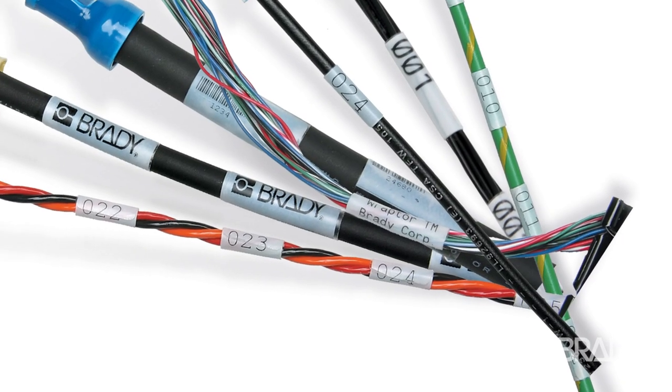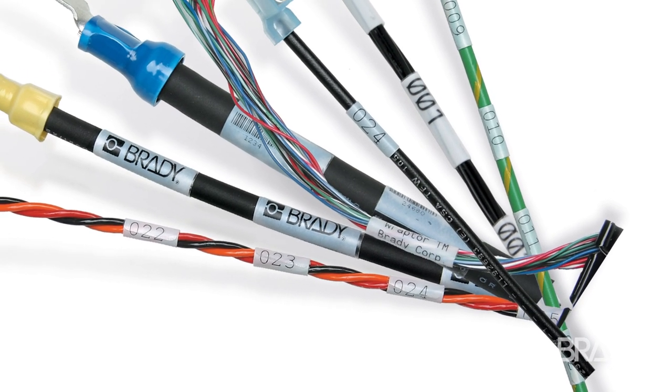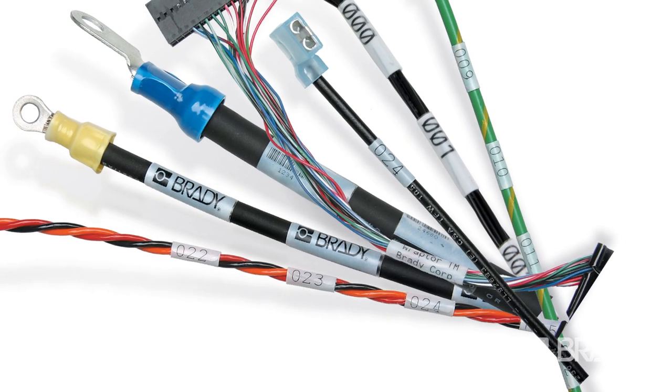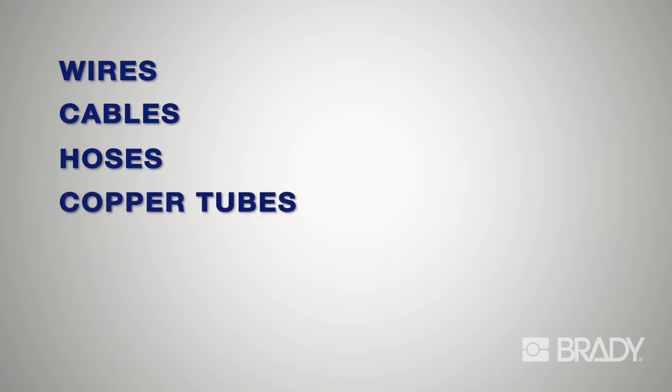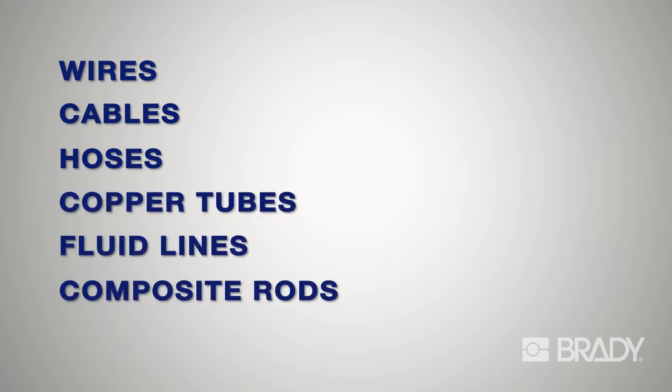And the Raptor A6500 works equally well on square jackets, most wire bundles, and a variety of other materials used for wires, cables, hoses, copper tubes, fluid lines, and composite rods.